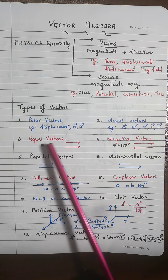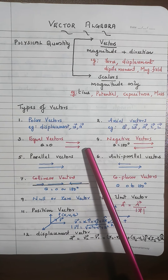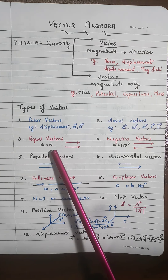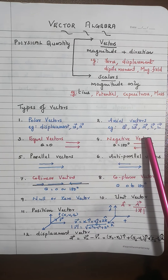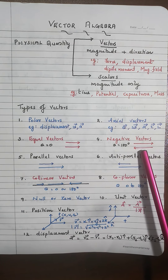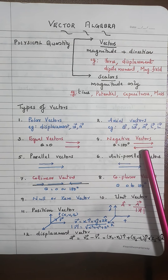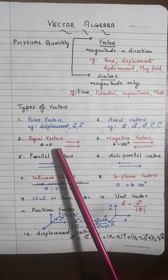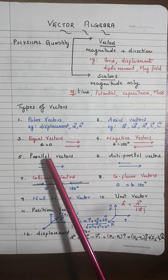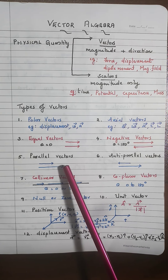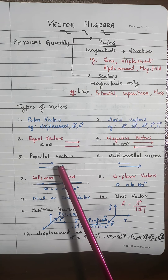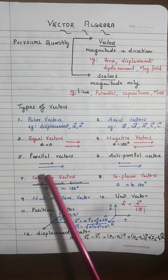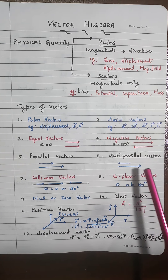Equal vectors: two vectors with the same magnitude and same direction. Keep in mind, the angle of orientation is 0 degrees. Negative vectors: two vectors with the same magnitude but opposite direction. Parallel vectors may also be equal vectors, but for parallel vectors, sometimes the magnitude need not be equal.